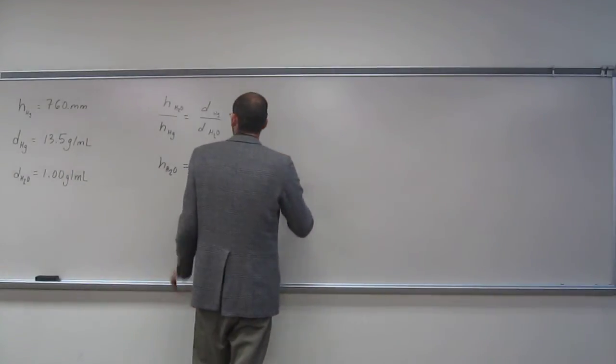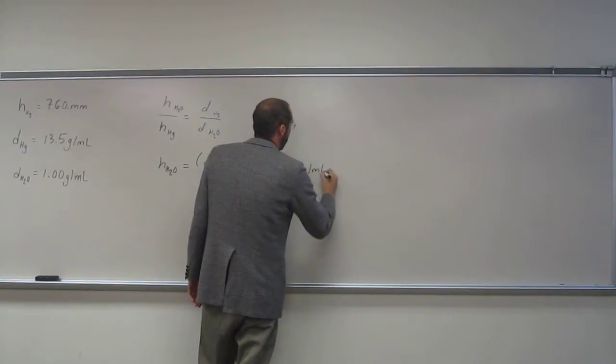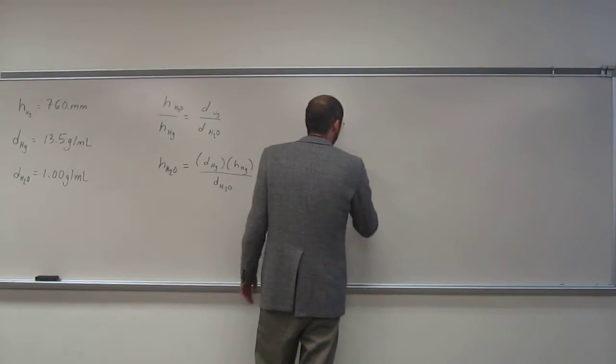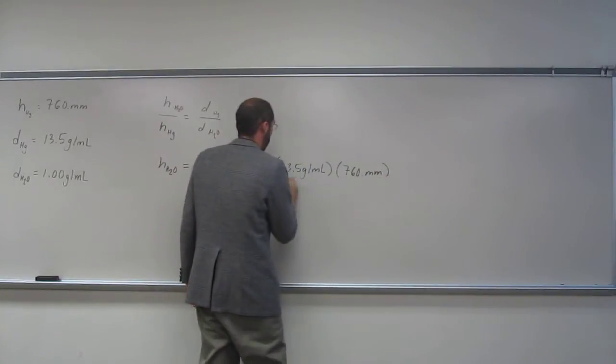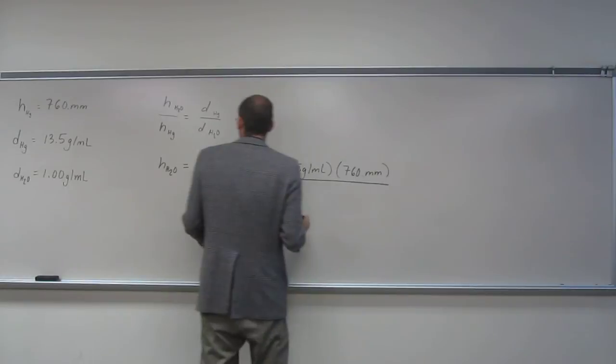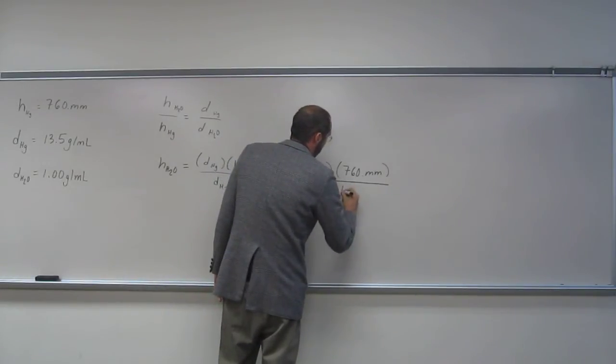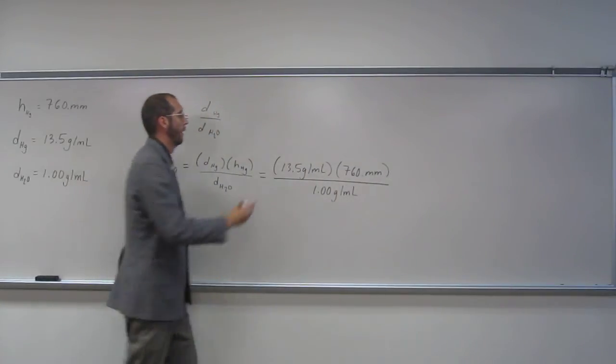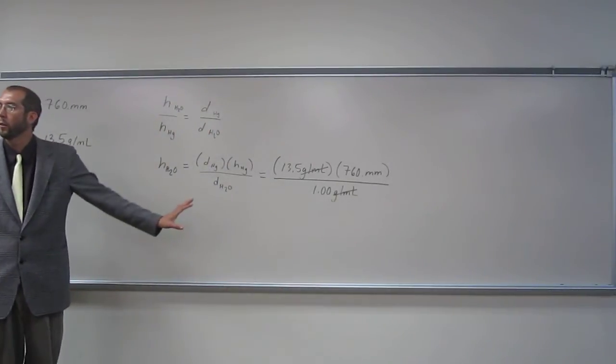Okay, from here we're going to plug in. So 13.5 grams per mil, height 760 millimeters, divided by grams per mil like that. Grams per mil cancels with grams per mil. Is everybody okay with doing that? So that should give us a height in millimeters of the water column.